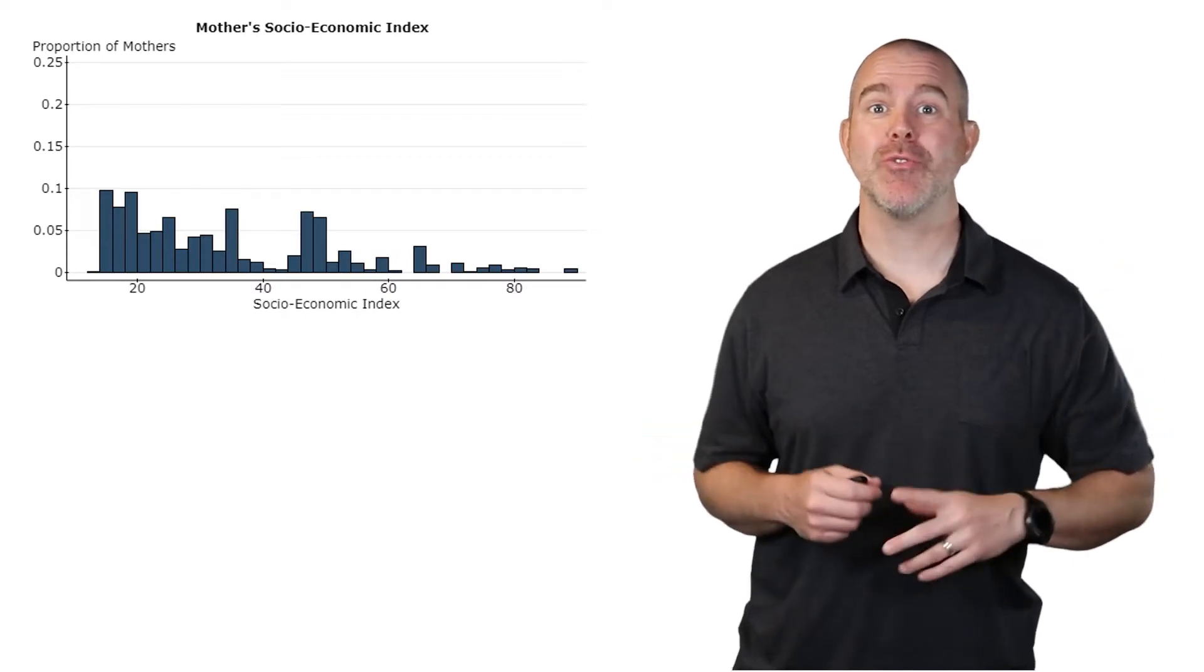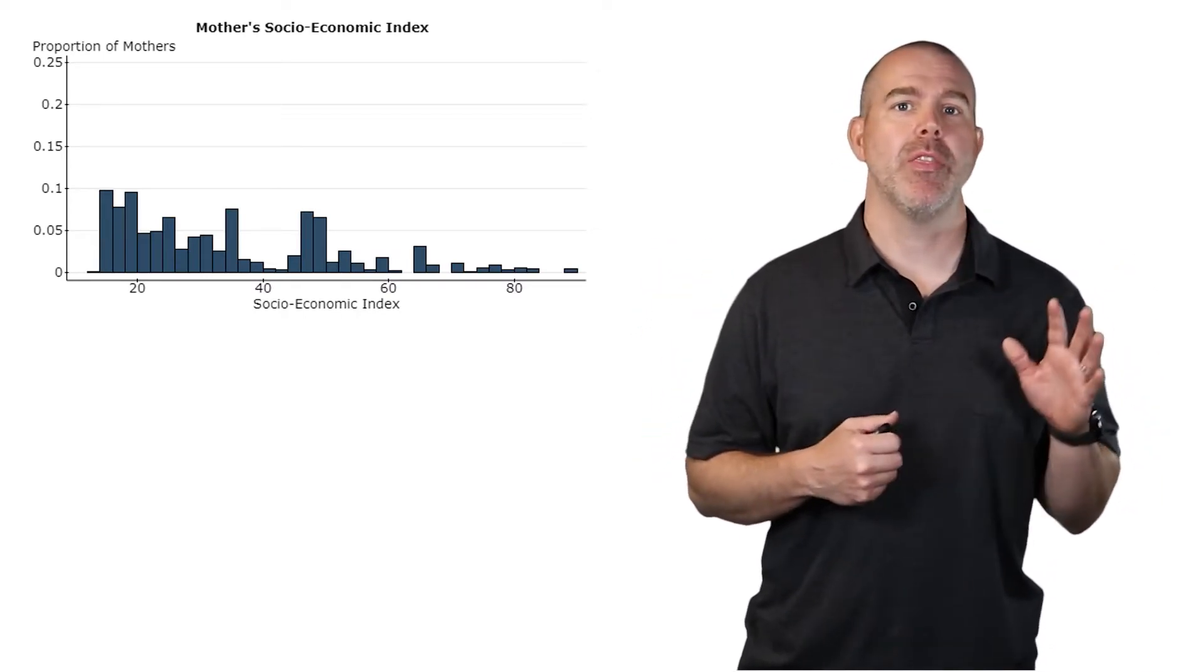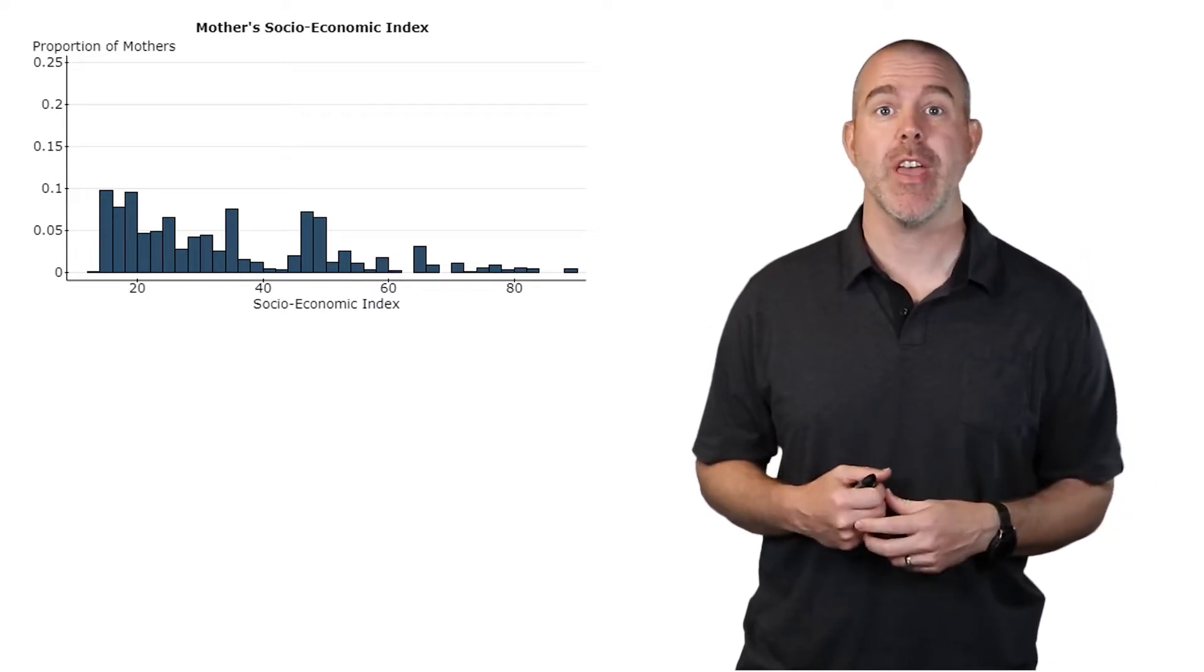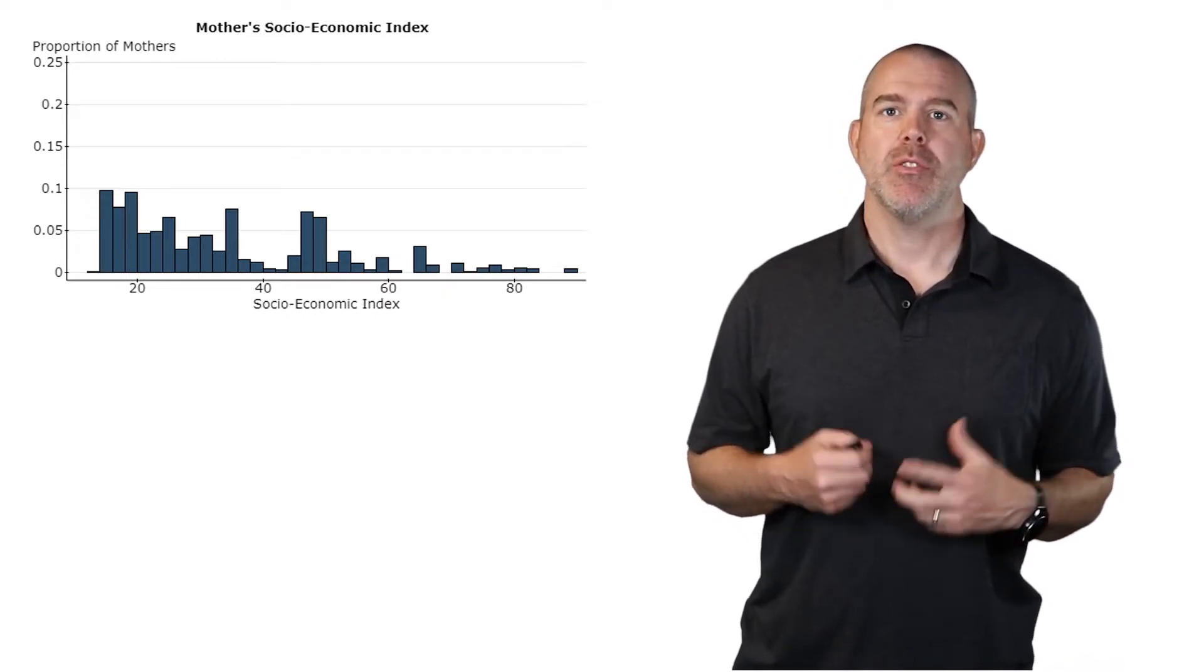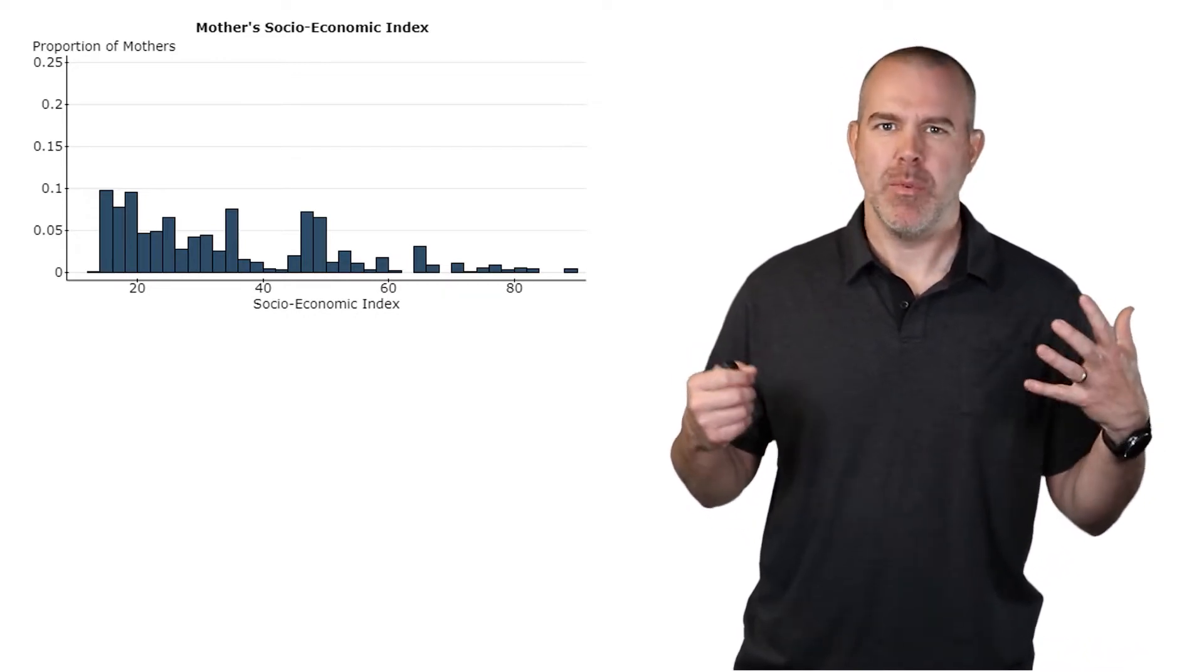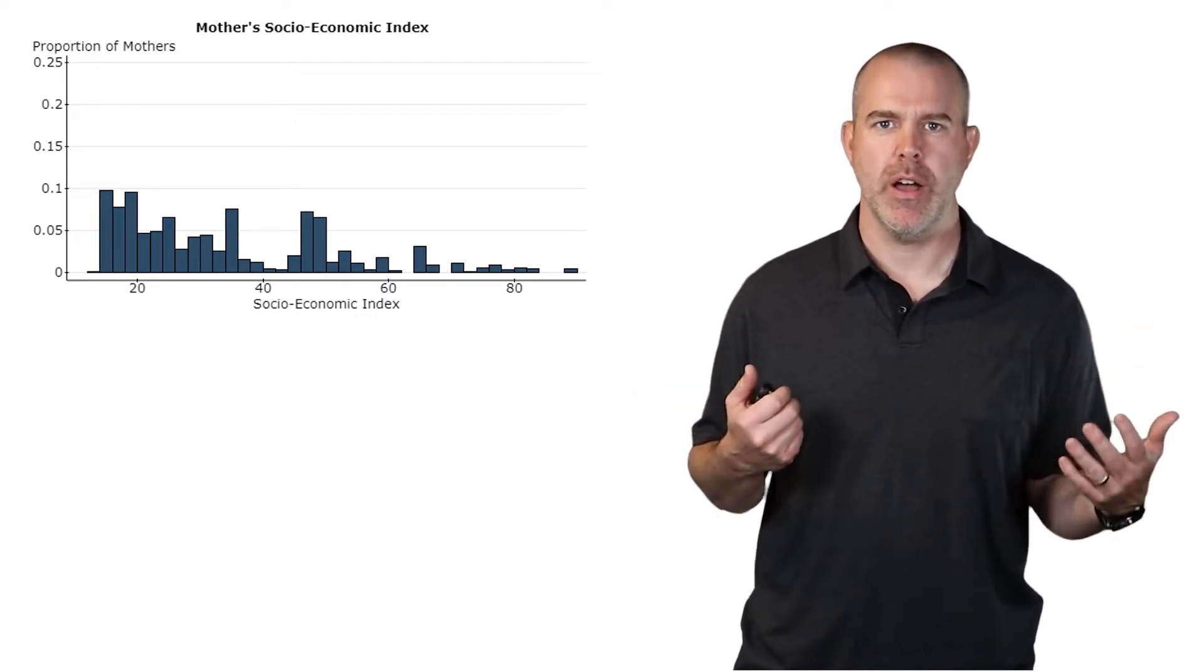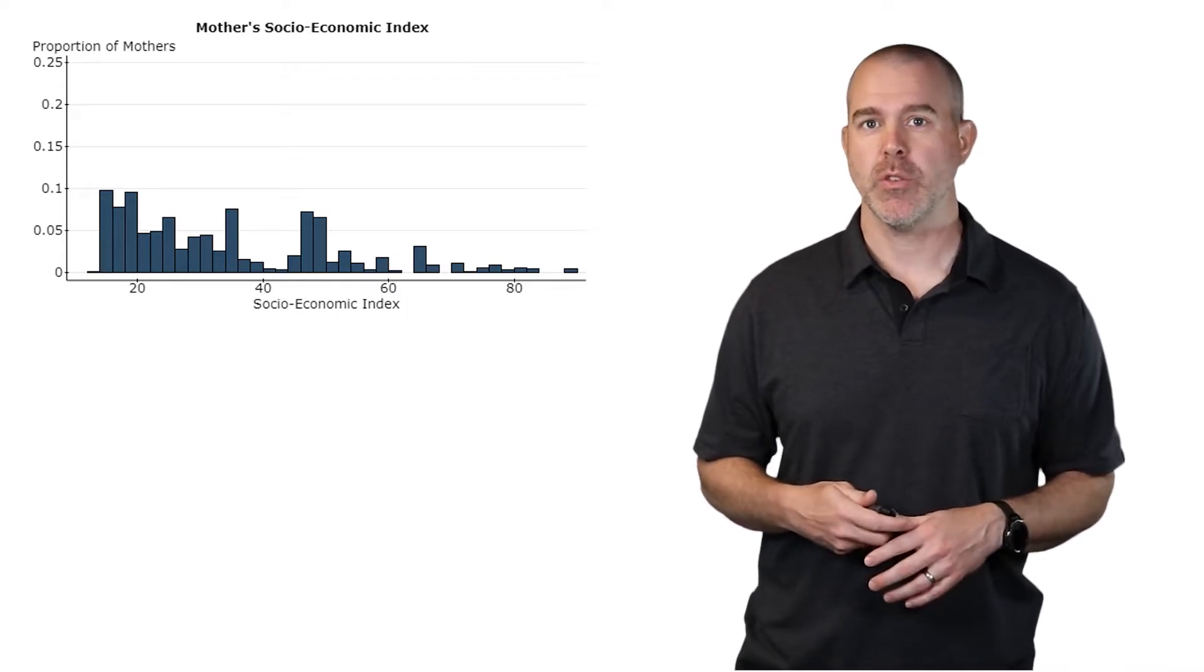All right, you know the drill by now. We're going to introduce this idea by way of an example. I have up here the mother's socioeconomic status from our Children of Immigrants database. Socioeconomic status is like income and wealth. There's this rating in that database, I believe from zero to 100. You can see the distribution very skewed right.